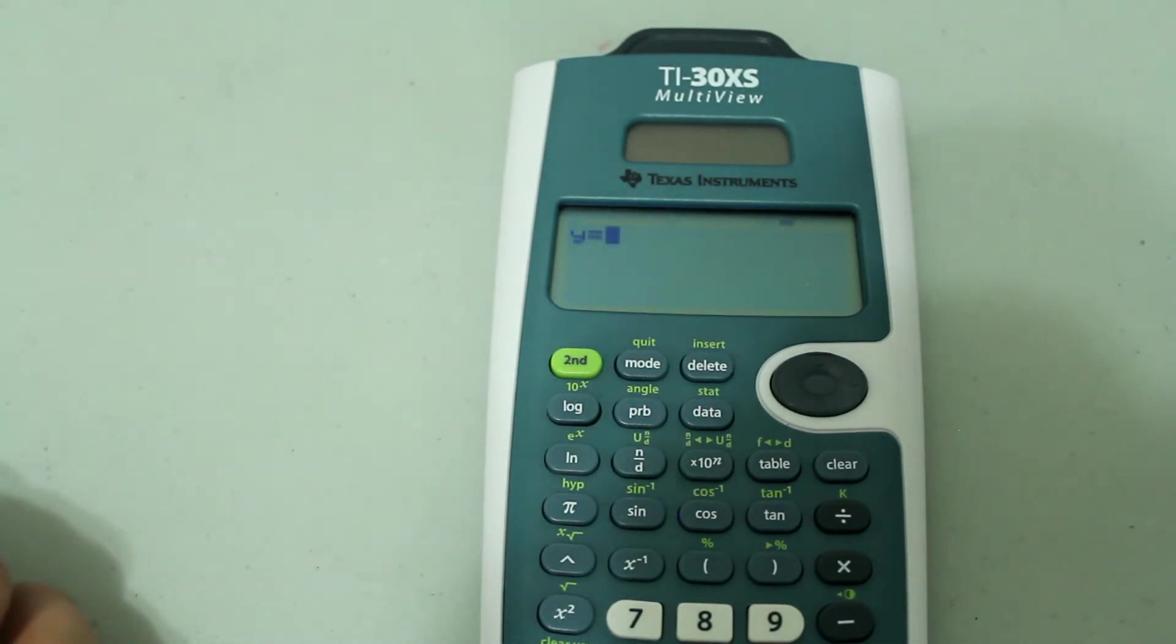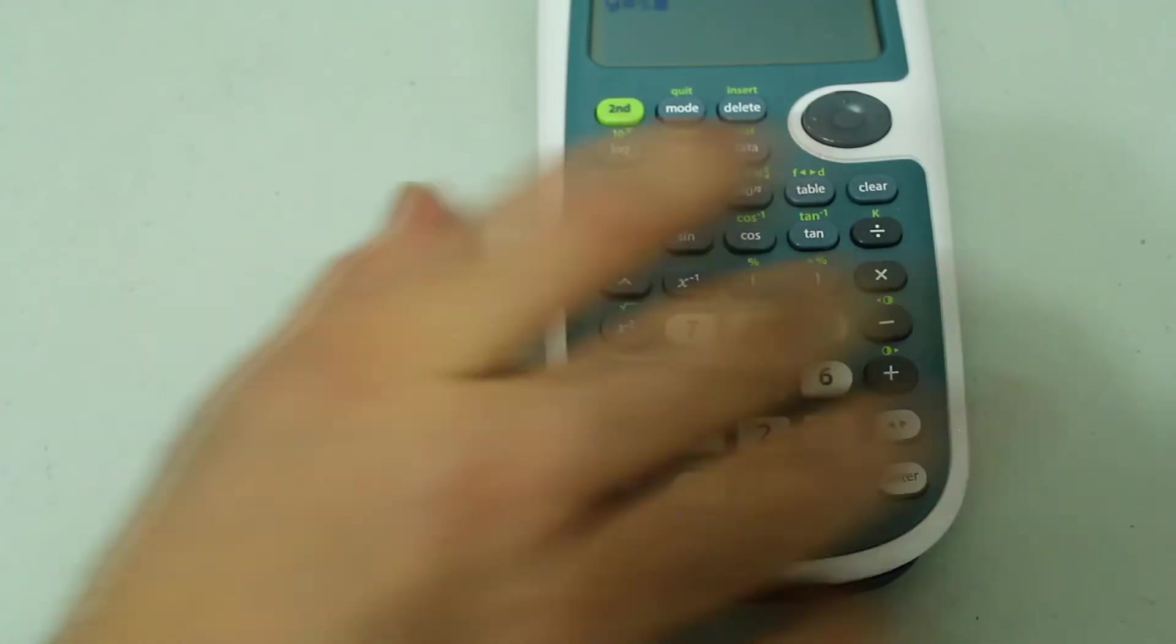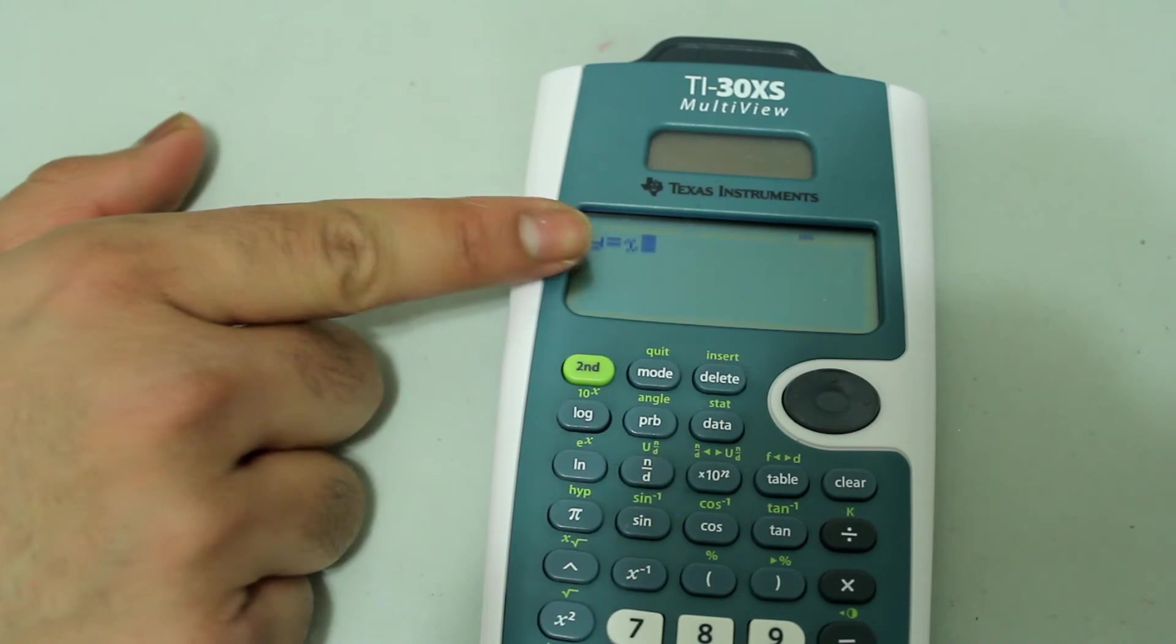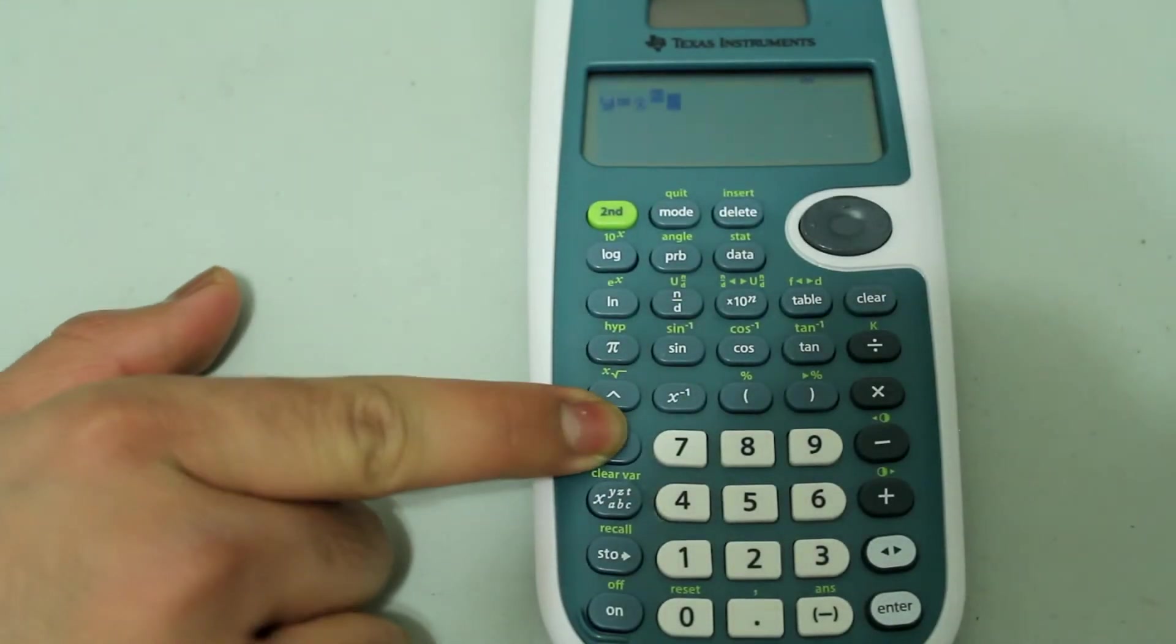I'm going to do a simple equation x squared plus 2x plus 3. To choose the variable, use this button. If you press it, notice that x appears on the screen. I'm going to do x squared, so use this button to square.